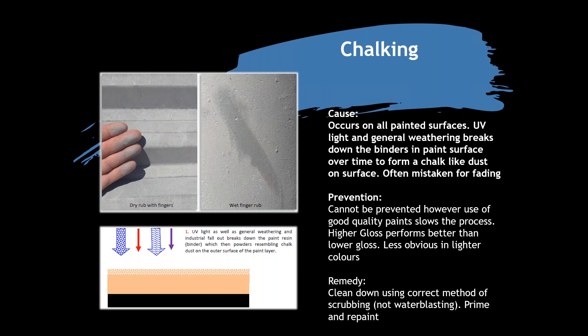Chalking can't be prevented, however using good quality paints and higher gloss paints slows the onset. To remedy it, clean the surface using the right cleaning solutions and scrubbing methods — not water blasting. Water blasting doesn't remove chalking; it needs that scrubbing effect. Chalking first appears on the northern elevation because that receives the most intense weathering — you can have severe chalking on the north and a virtually pristine south elevation.